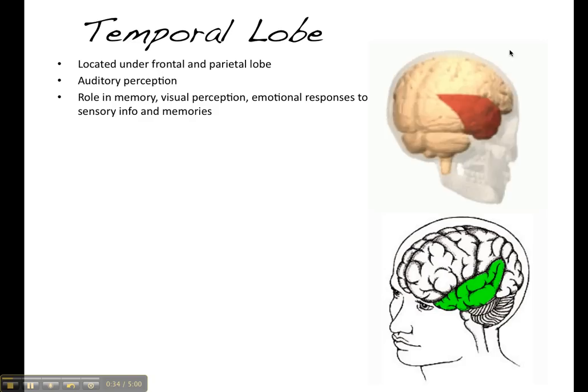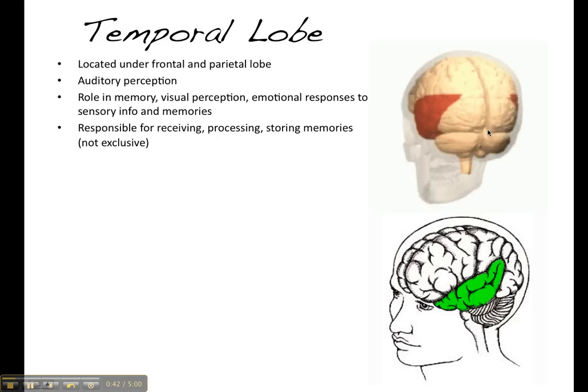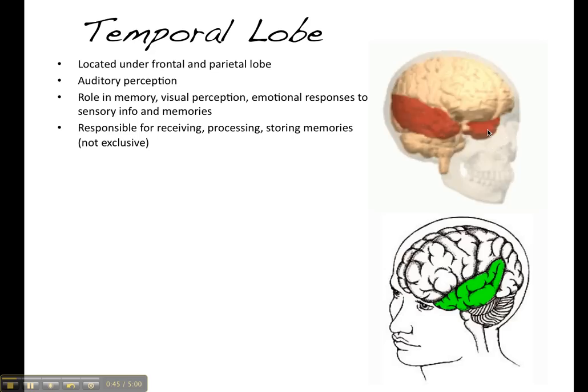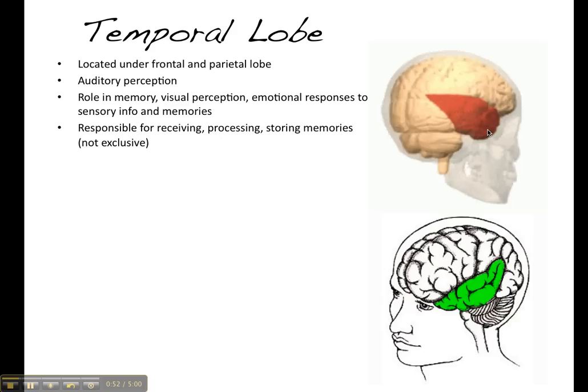The amygdala is involved in emotions and memory formation. It is responsible for receiving, processing, and storing memories. However, this is not exclusively the case, and we're going to be learning about the role that the hippocampus and the amygdala play later on when we do memory.